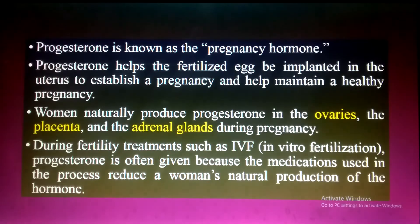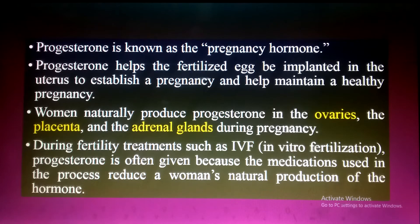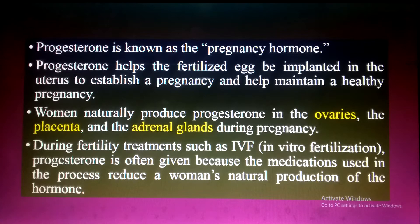Now, what is progesterone? I discussed this in detail in my previous lecture. Progesterone, also known as P4, is the pregnancy hormone. Progesterone helps the fertilized egg be implanted in the uterus to establish a pregnancy and helps maintain a healthy pregnancy. Women naturally produce progesterone in the ovaries, the placenta, and the adrenal glands during pregnancy.